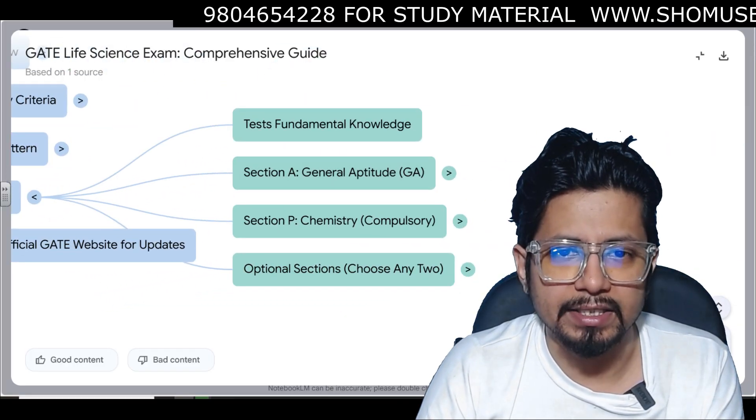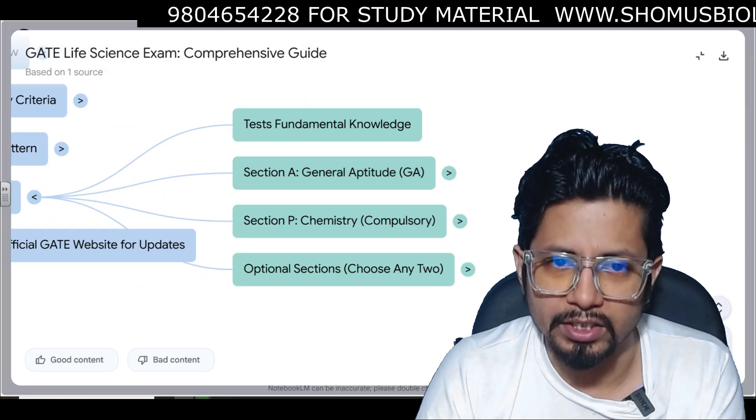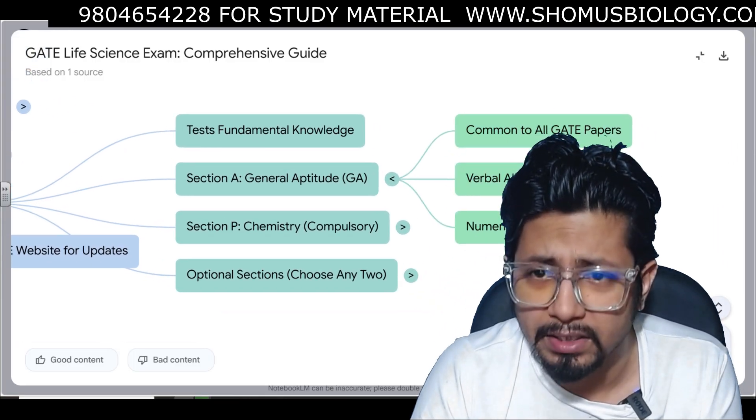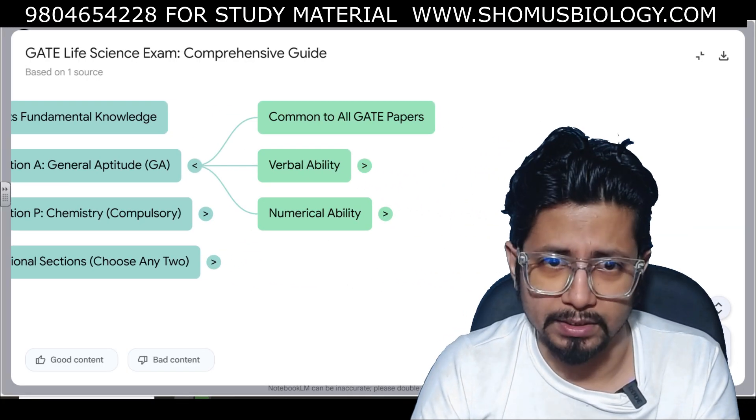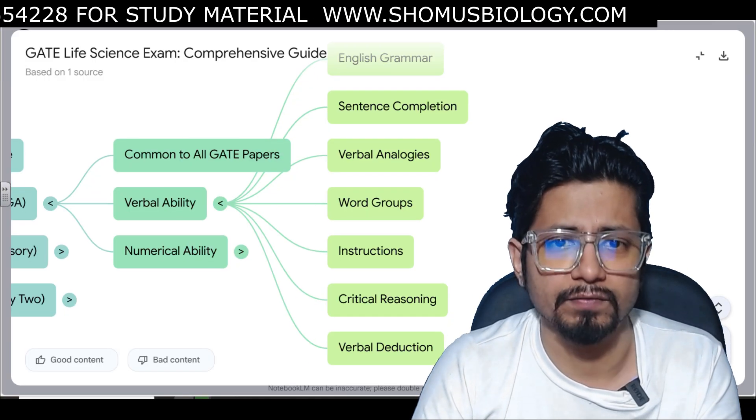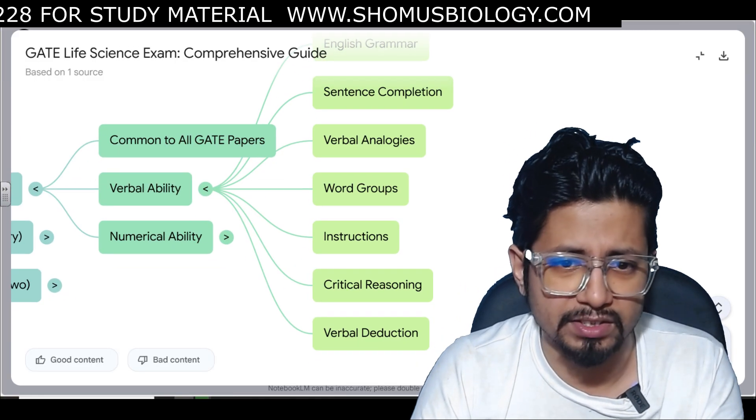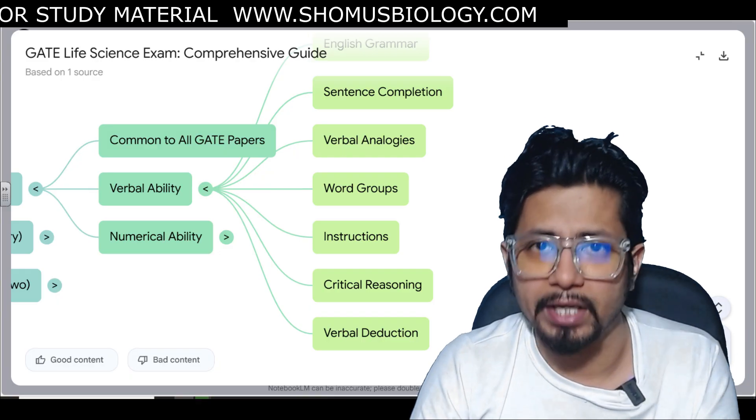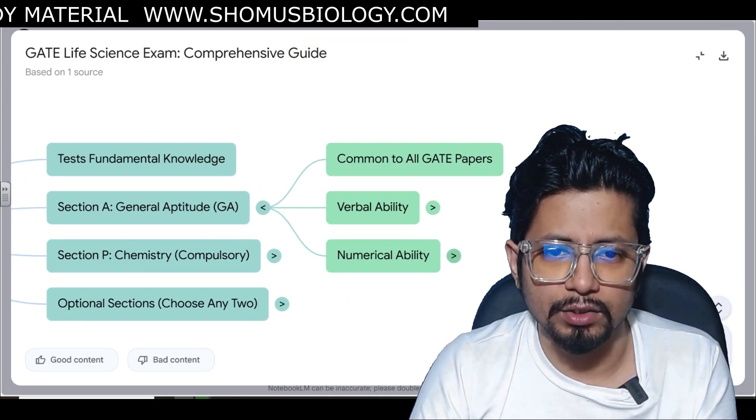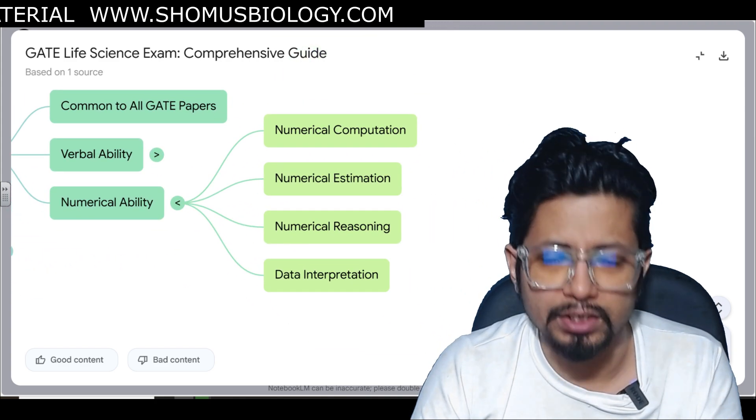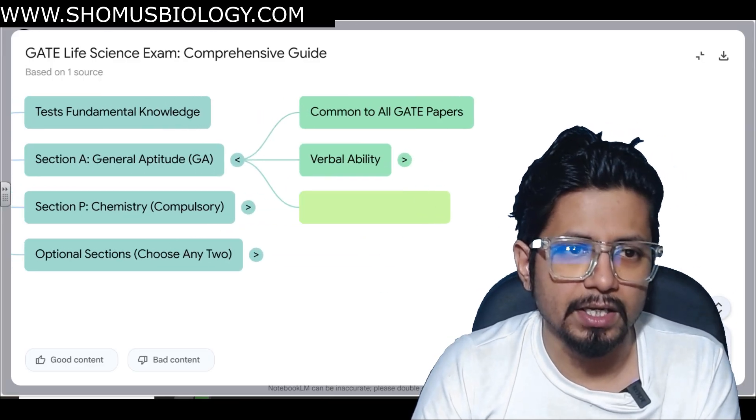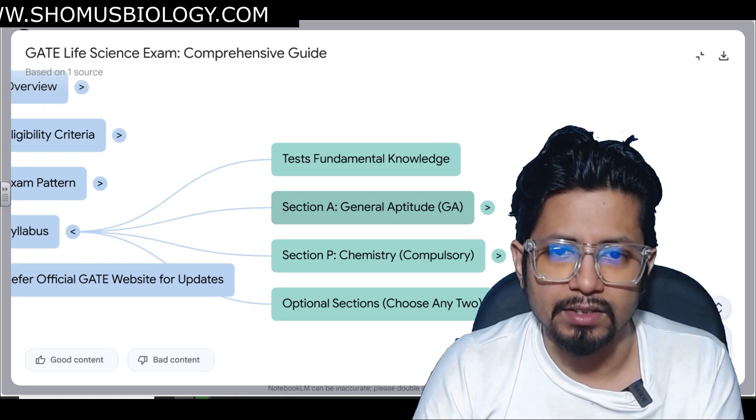I'll click the Syllabus. Here you have fundamental knowledge will be tested for Section A General Aptitude. The syllabus is common for all GATE papers. Verbal ability will be provided where English grammar, sentence completion, verbal analogies, word groupings, instructions, critical reasoning and verbal deductions will be provided. Next is Numerical Ability where numerical computation, numerical estimation, numerical reasoning and data interpretation will be provided.